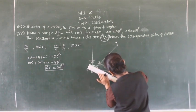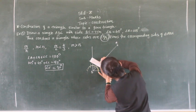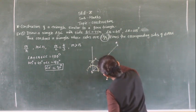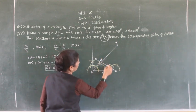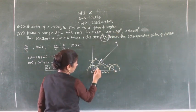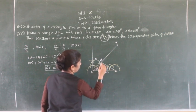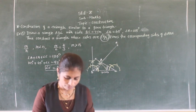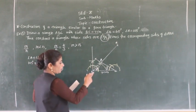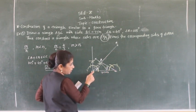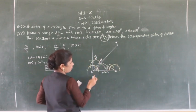From point C, draw ray CY making an angle of 30 degrees, which meets ray BX at point A. This is your required triangle ABC with angle B equals 45 degrees and angle C equals 30 degrees, giving angle A equals 105 degrees. Now for the similar triangle construction, draw an acute angle at point B — a ray BZ.